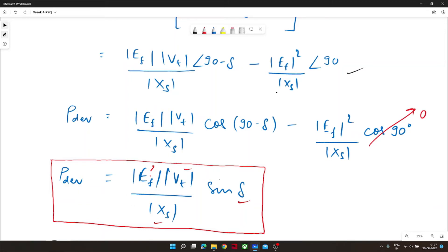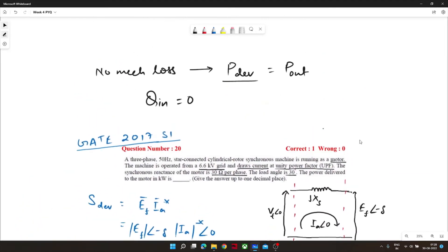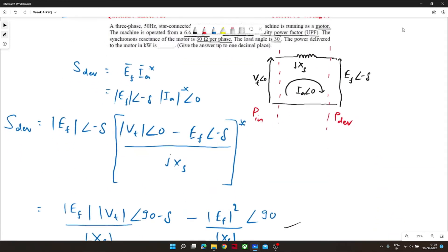Now we don't know E_f but one information was given in the second sentence while I was reading the problem that motor is operated from a grid and it draws current at unity power factor. So I inferred that Q input is equal to zero. Now I will see what will happen after Q input is equal to zero.